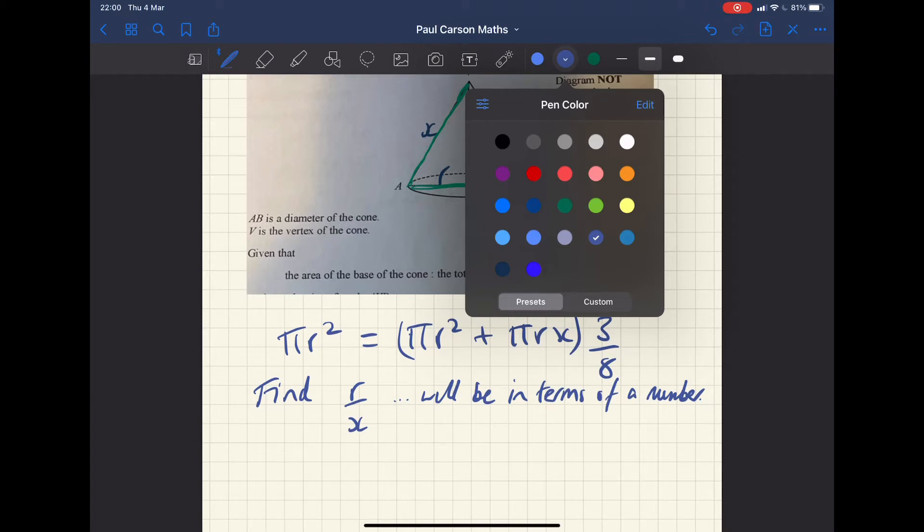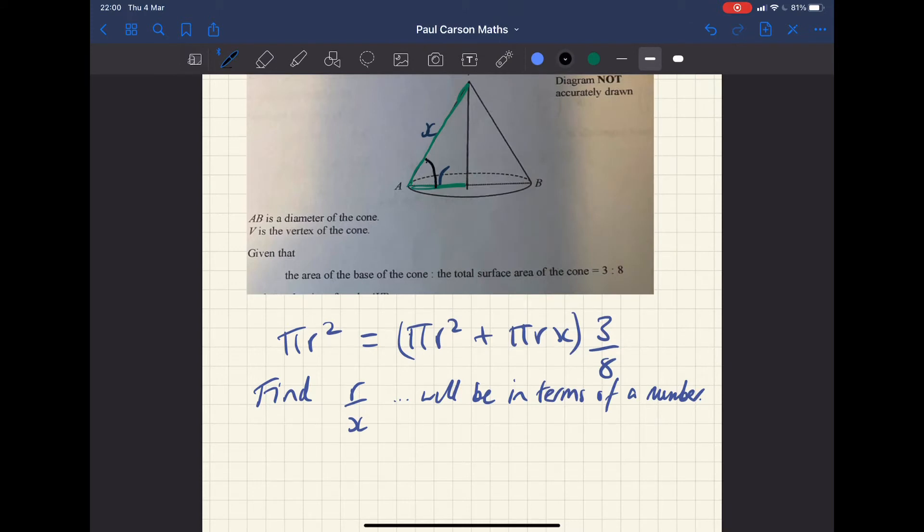What colour should I go for? I want something dark. So I'll go black. So try to find this angle. So from our knowledge of trigonometry, r and x, because this is a right angle triangle, r and x will enable us to find this angle by using which trig identity? I'll tell you at the end.